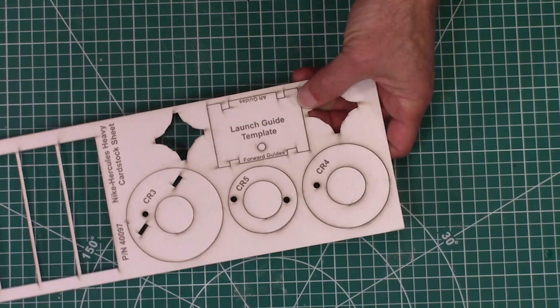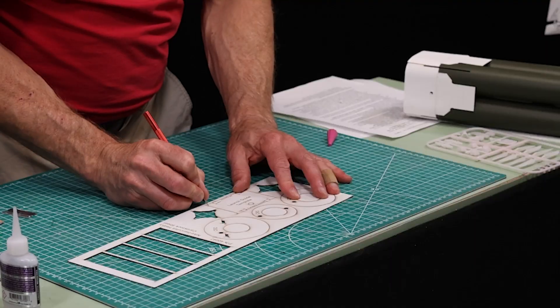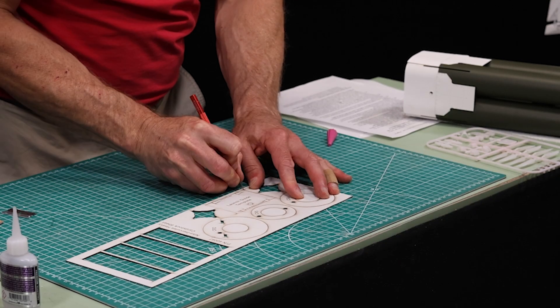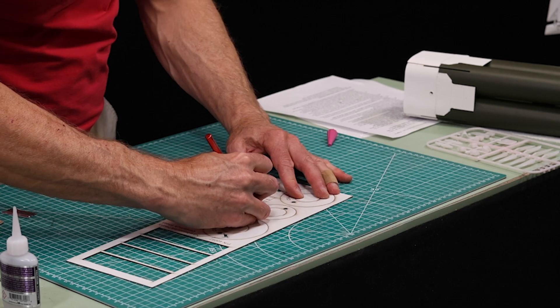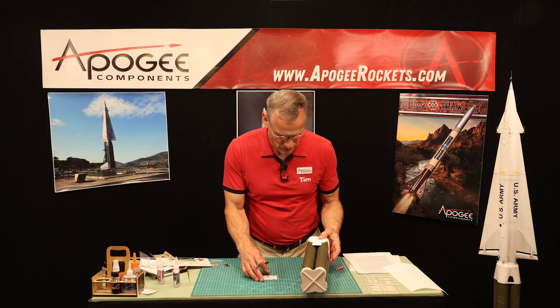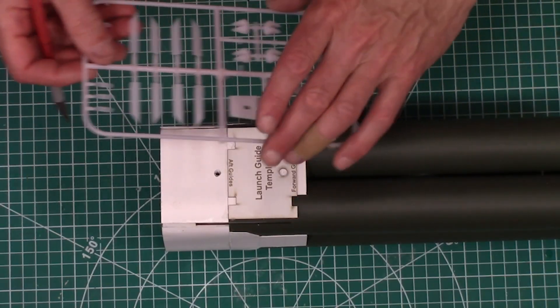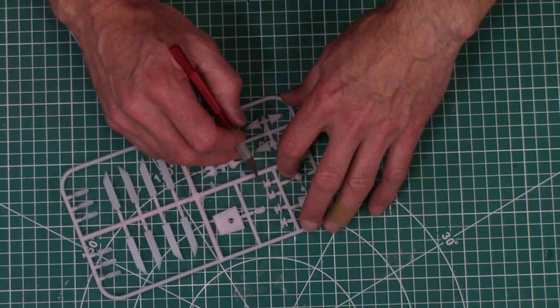We're on step 61. We're going to take this launch guide template from the cardstock sheet right here. I'm going to pop that out. This is used twice. So don't throw it away after this step. And pop that hole out. So now this is where we want to put it.